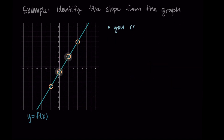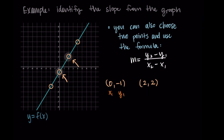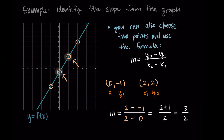Now let's verify using the formula with the coordinates of those points. Our formula is m equals y2 minus y1 over x2 minus x1. Using points (0, -1) as x1, y1 and (2, 2) as x2, y2: y2 minus y1 is 2 minus negative 1, divided by x2 minus x1, which is 2 minus 0. On the numerator, the two negatives become a positive, so we have 2 plus 1 over 2, which simplifies to 3 over 2. That's the same slope we got by counting, confirming we can use the formula.